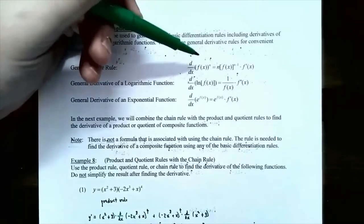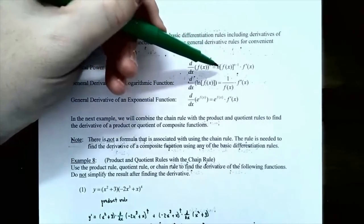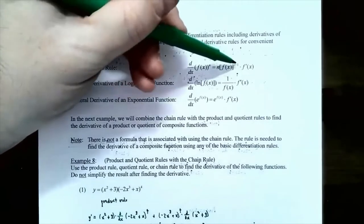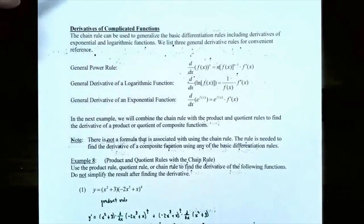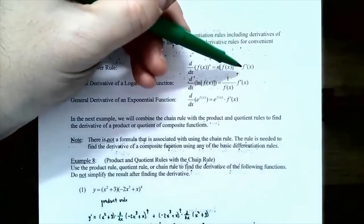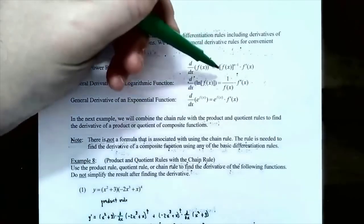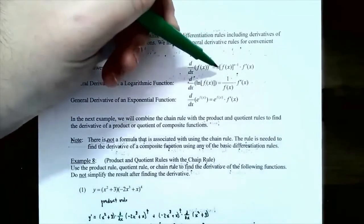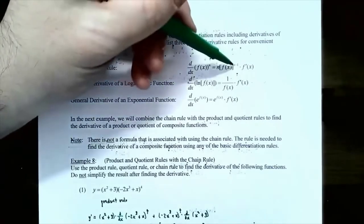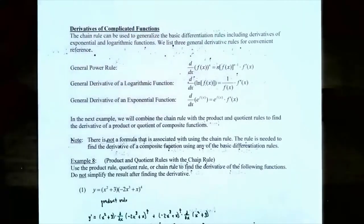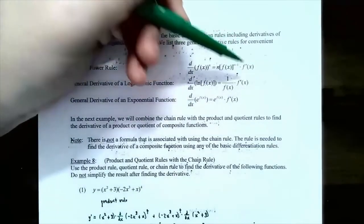The derivative of the outside function is u to the n, so the derivative will be n times u to the n minus 1. Here u is f of x, the inside function, and we also have to take the derivative of the inside function, which is f prime of x. So the power rule says you take the power to the front and make it a coefficient, you leave the inside function as it is unchanged, subtract one from the power just like the regular power rule, and then multiply by the derivative of the inside function.